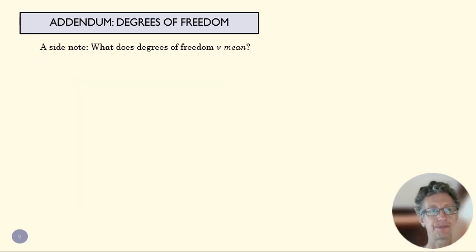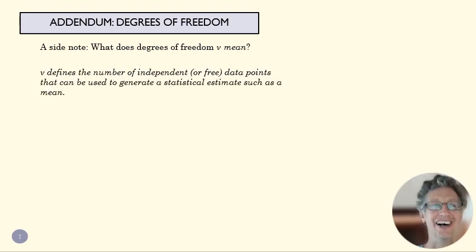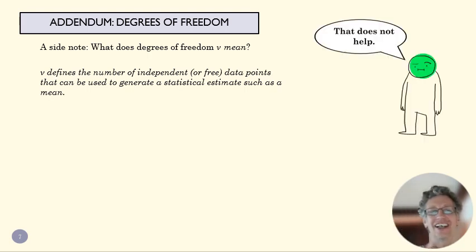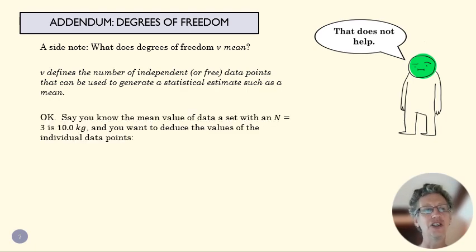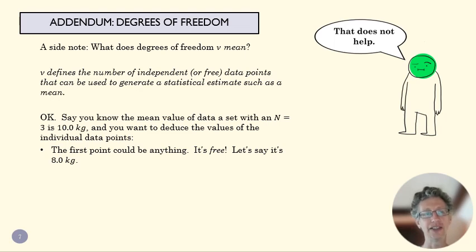One last thing: what degrees of freedom means. Here's a definition, and if you're like me, you get about halfway through that sentence and think, 'I don't know what that means.' In short, it's kind of telling us if I'm taking some kind of statistical average or linear fit, how many data points there actually are independent once I know what my result is.